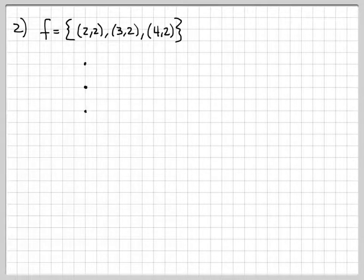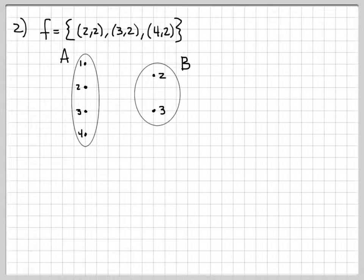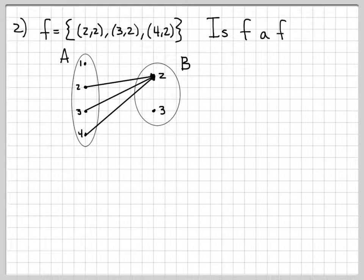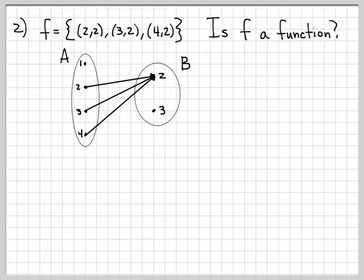Let's do another example. For this one, let's let F equal (2,2), (3,2), and (4,2). Again, we can visualize that. So we draw an arrow from 2 to 2, from 3 to 2, and from 4 to 2. And we ask ourselves the question, is F a function? Well, again, if we go back to the definition of a function, we see that the answer again is no.